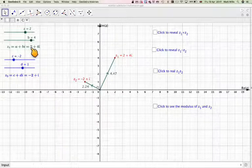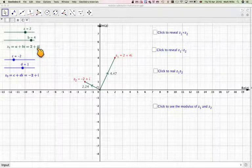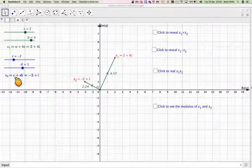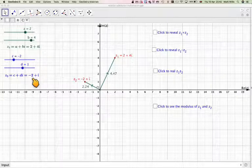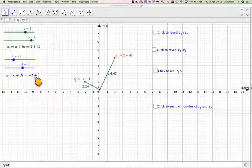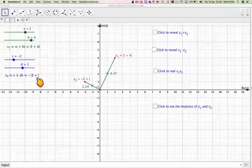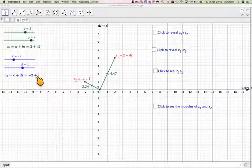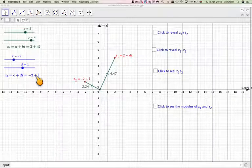So at the moment we've got 2, the real part is 2, and the imaginary part is 4. And we've got Z2, C plus DI, the real part being minus 2, and the imaginary part of this being 1.